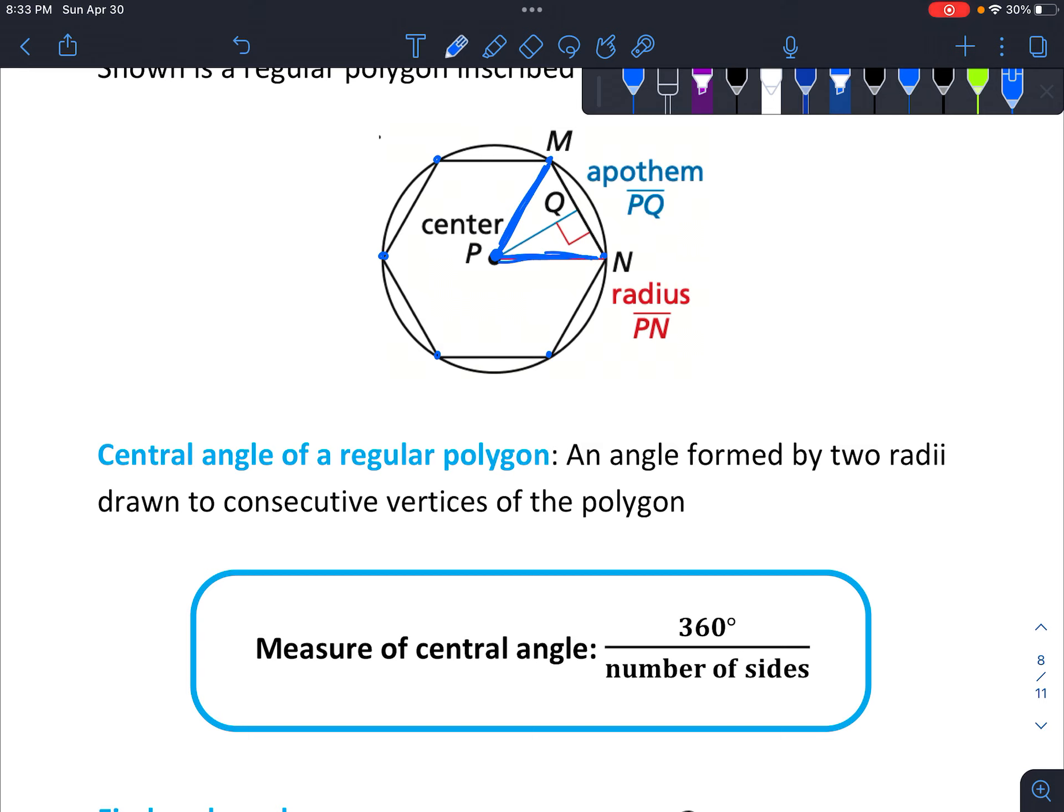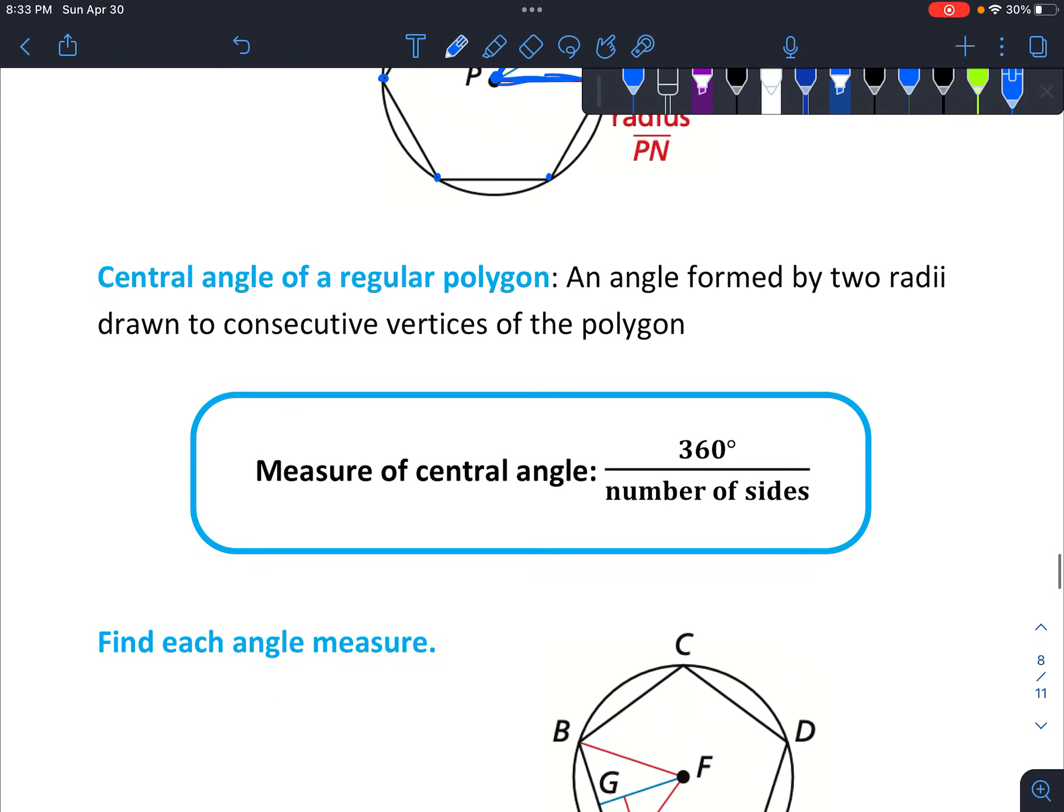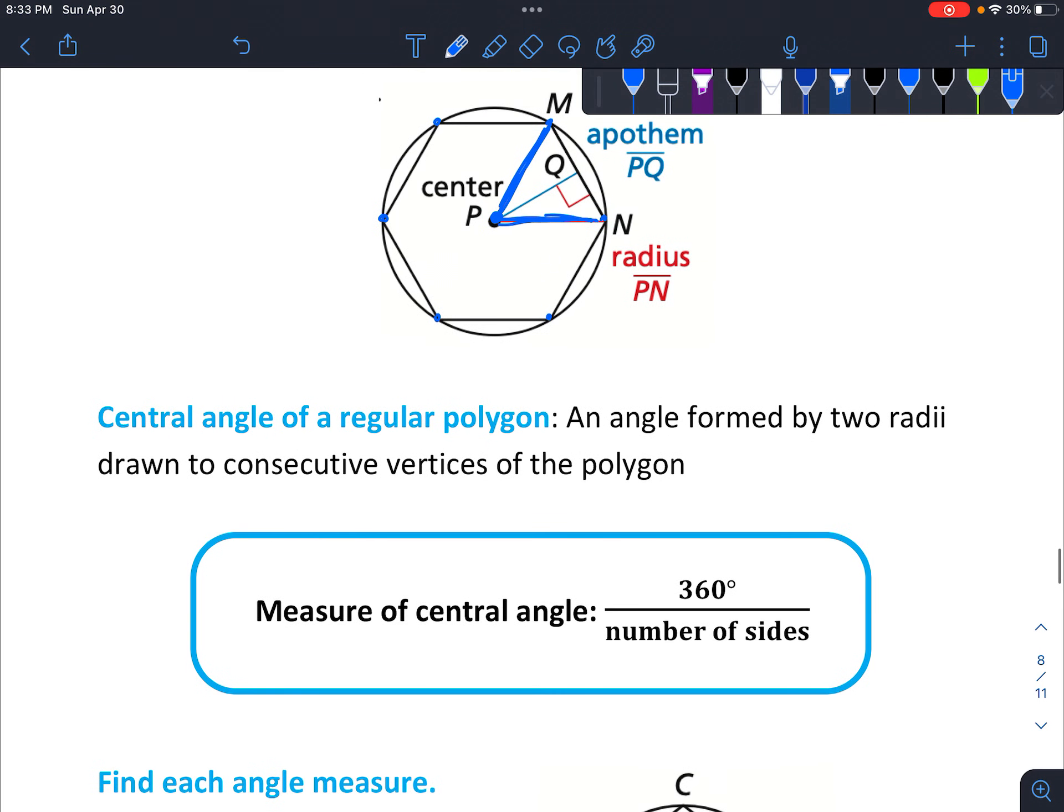And there's something called the central angle of a regular polygon. It's basically that angle that's formed by those two radii, drawn to consecutive vertices of the polygon. And the measure of that central angle is always 360 divided by the number of sides.